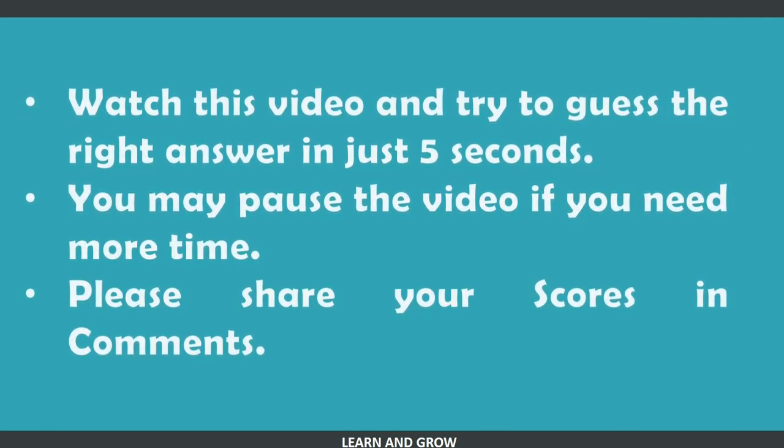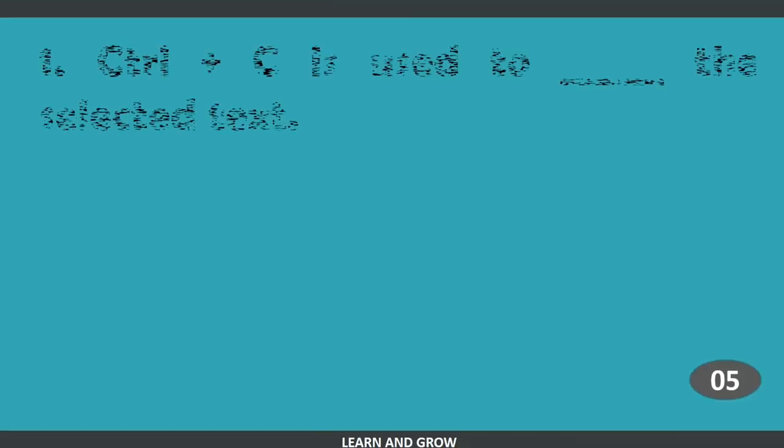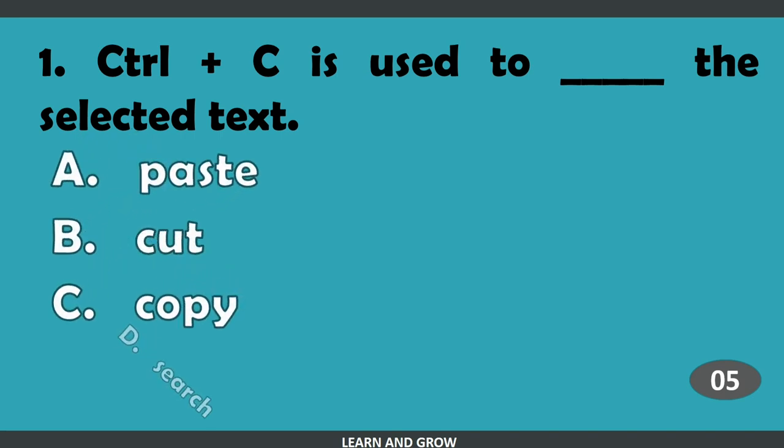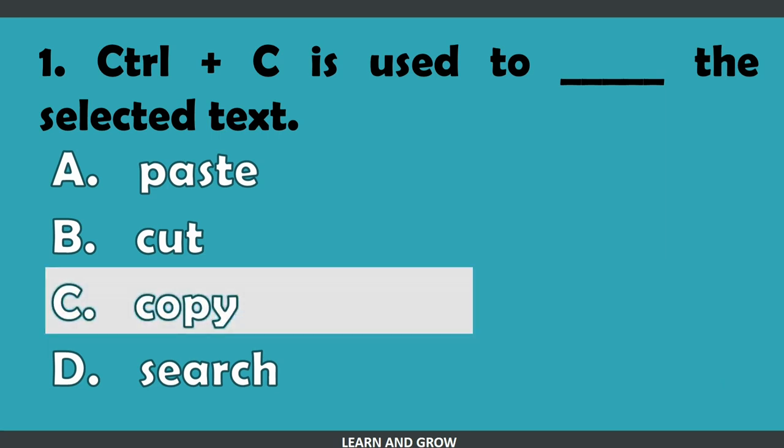Please share your scores in the comments, and don't forget to like, share, comment, and subscribe to our YouTube channel. Control plus C is used to blank the selected text. Option A: paste, B: cut, C: copy, or D: search. The right answer is option C, copy.